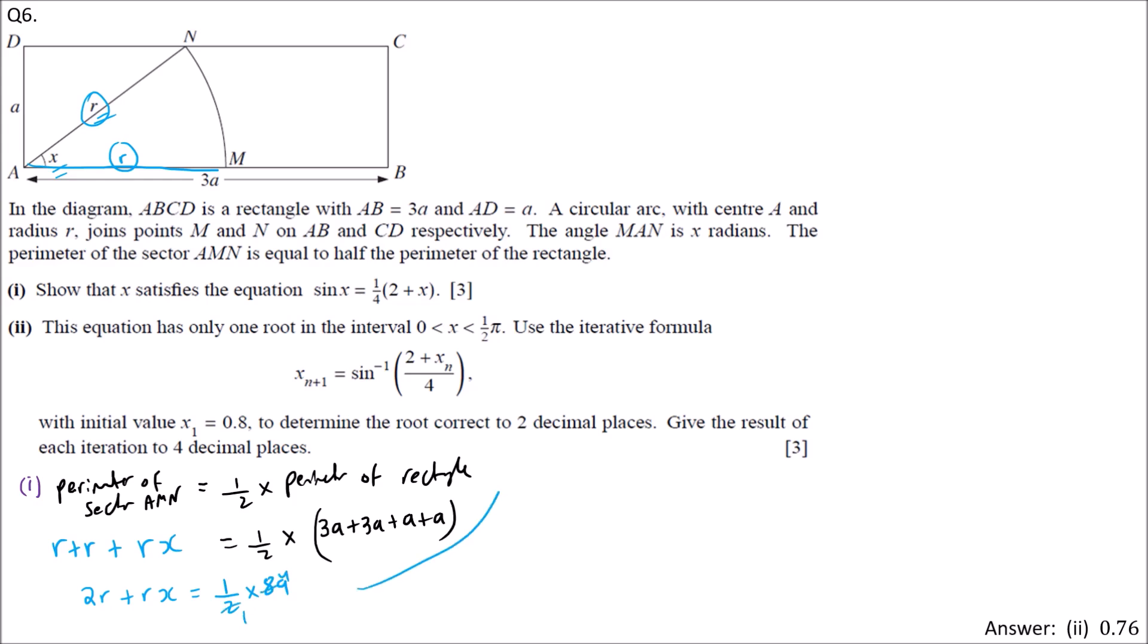If we simplify, we have 2R plus RX equals half times (3A plus 3A is 6A, plus A plus A is 8A). Divide by 2, this becomes 4. So 2R plus RX equals 4A.